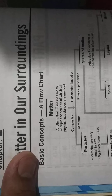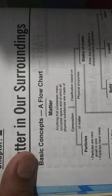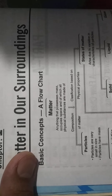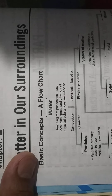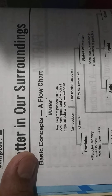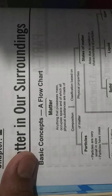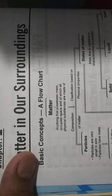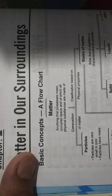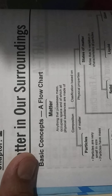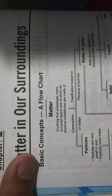What is solid? Solid has a distinct boundary and fixed volume. Solid maintains its shape. They are rigid and have negligible compressibility.